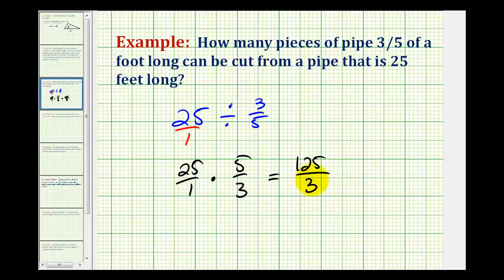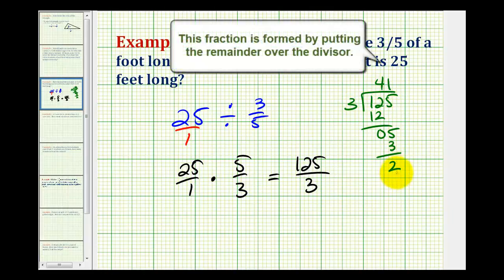Now we need to figure out how many pieces this represents. A fraction bar represents division. So now we'll take one hundred twenty five and divide by three. So there are four threes in twelve. Four times three is twelve. Subtract. Bring down the five. And there's one three in five. We have a remainder of two. So one hundred twenty five divided by three is equal to forty one with a remainder of two or forty one and two thirds.